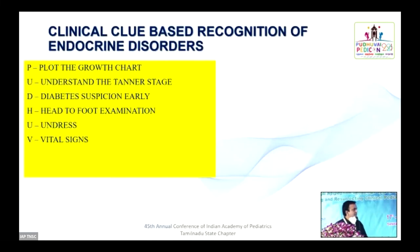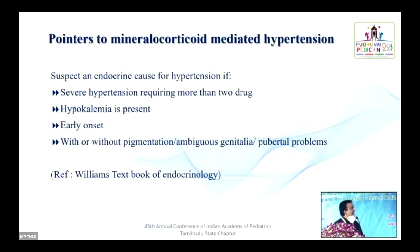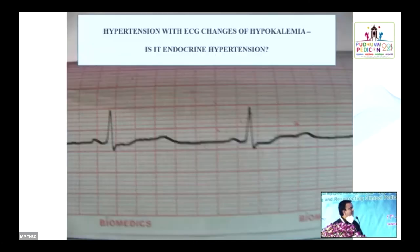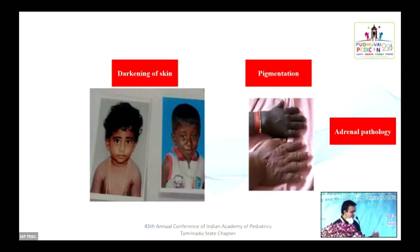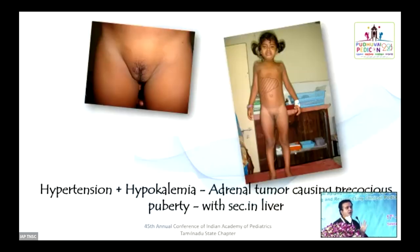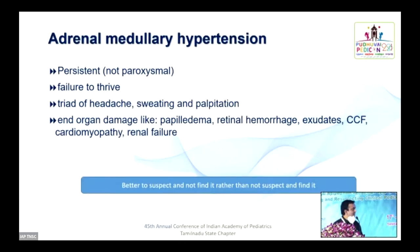Next, vital signs. Hypertension with hypokalemia, hypertension with alkalosis, severe hypertension with or without pigmentation, hypertension with ambiguous genitalia and pubertal problems — always think whether the adrenal gland is the culprit. Hypertension with pigmentation, or hypertension with early pubic hair and clitoromegaly, always raises endocrine pathology. Hypertension with severe end-organ damage, headache, sweating, and palpitation points to adrenal medullary pathology — when severe or requiring more than one drug, evaluate for adrenal medullary hypertension.